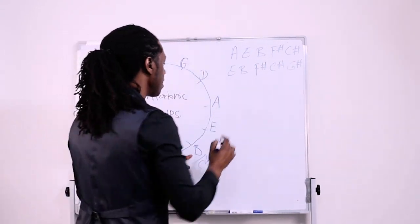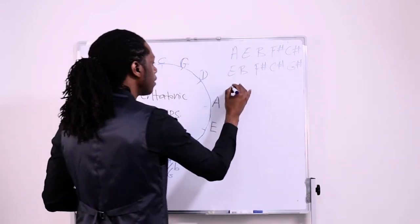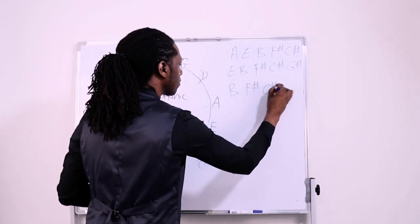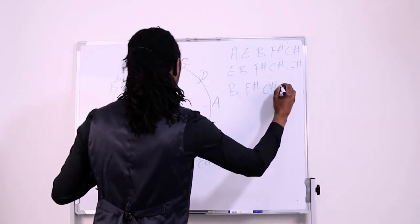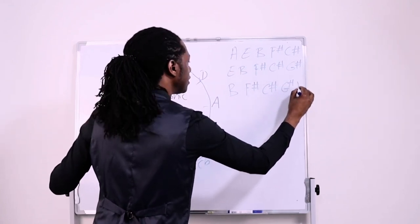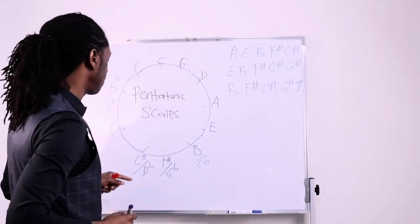How about B? So we have B because it's a sharp note. We have to keep everything sharp. So we have B, we have F sharp, we have C sharp, we have G sharp, and we have D sharp. Okay? One, two, three, four, five. All right?